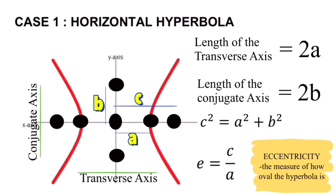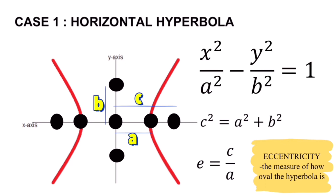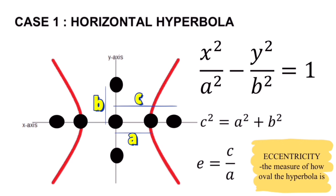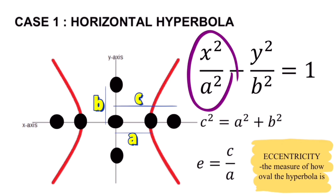We remember that eccentricity for a hyperbola is always greater than 1. The standard formula for a horizontal hyperbola is x²/a² − y²/b² = 1. Since A is on the horizontal axis, it is placed under the x², and since the vertex is on the horizontal axis, the x²/a² term is positive.